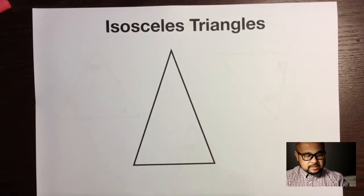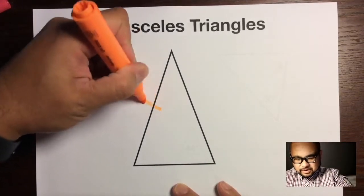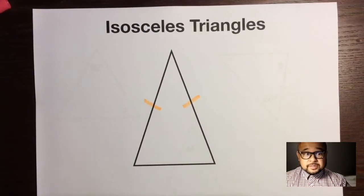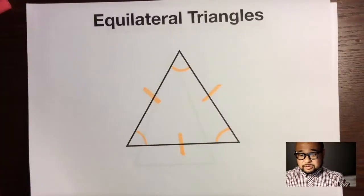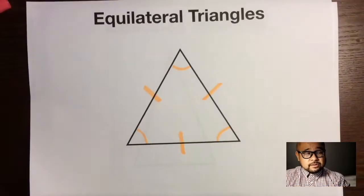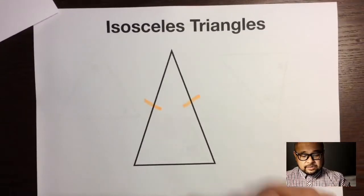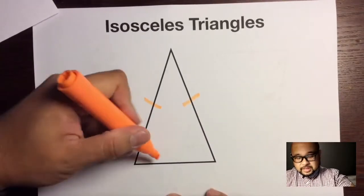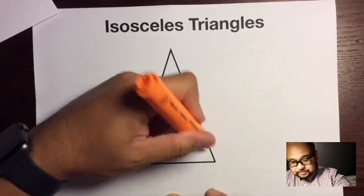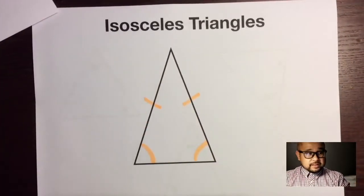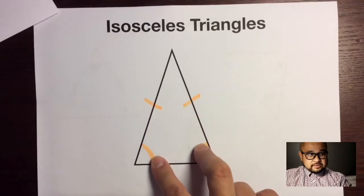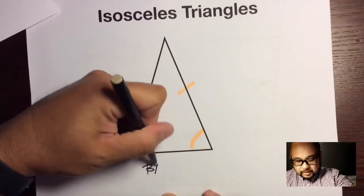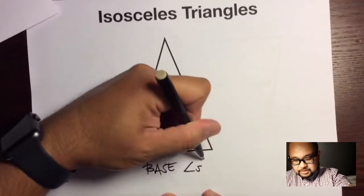Now isosceles triangles are a little different. We know that it's isosceles because two sides are congruent and one side is isolated from the other two. Going back to the equilateral triangle — all three sides are congruent so all three angles are congruent. With isosceles triangles, two sides are congruent, so two angles have to be congruent. It's these two angles that these two sides are pointing at.